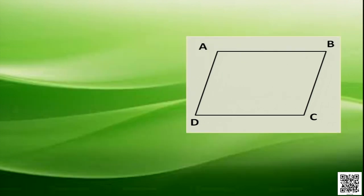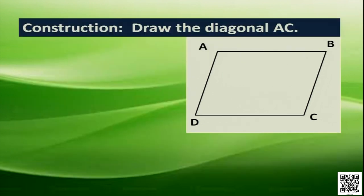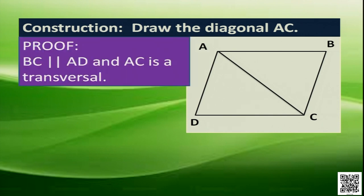We need a construction. Draw the diagonal AC. Now, after drawing the diagonal AC, as we know, we have two congruent triangles. Let us prove it.